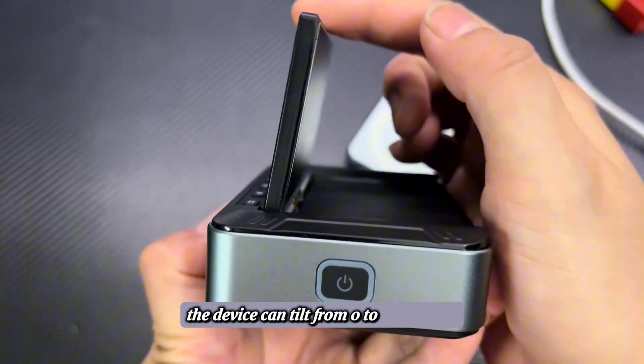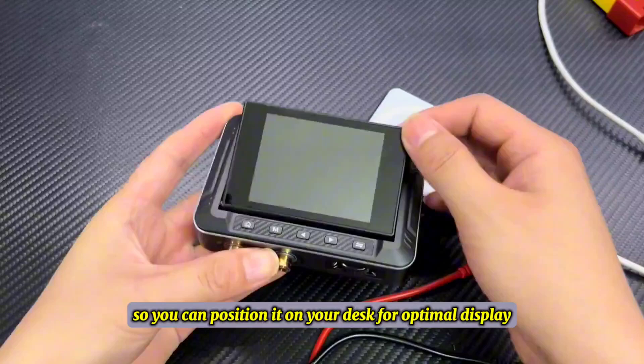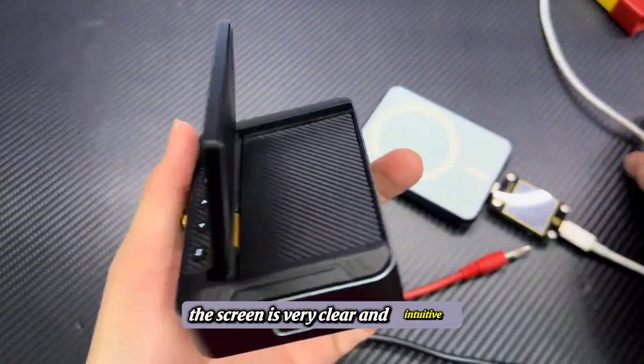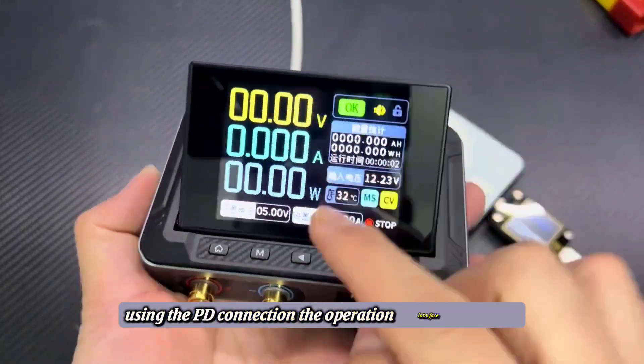The device can tilt from 0 to 90 degrees, so you can position it on your desk for optimal display. The screen is very clear and intuitive. Now, let's plug it into a power bank using the PD connection. The operation interface appears.